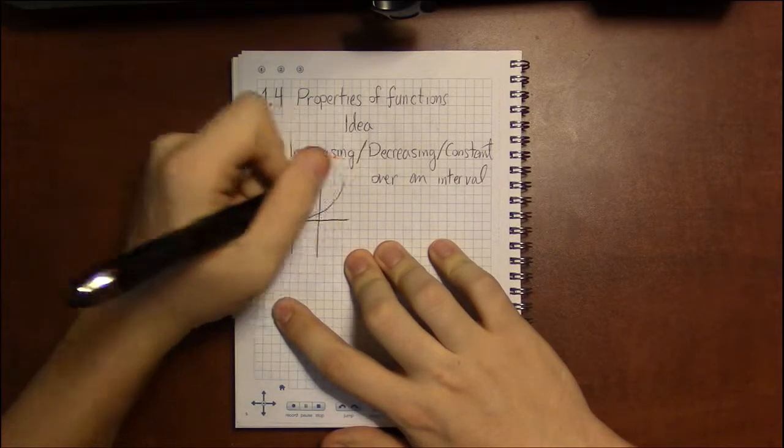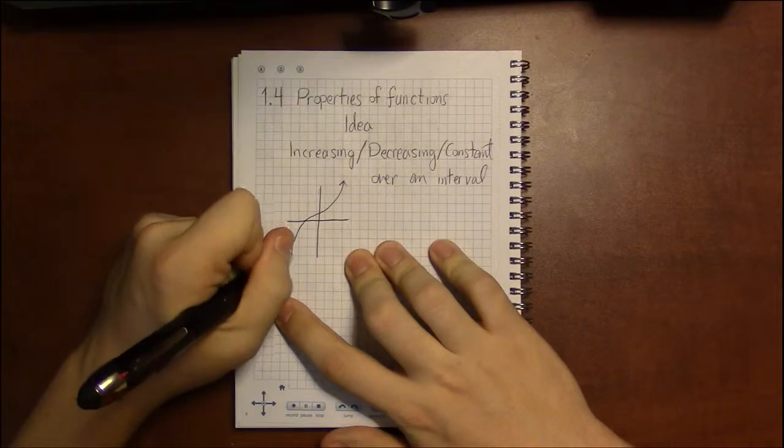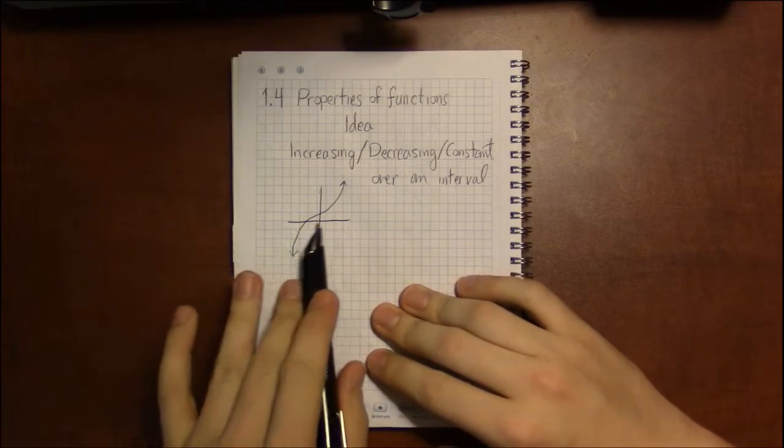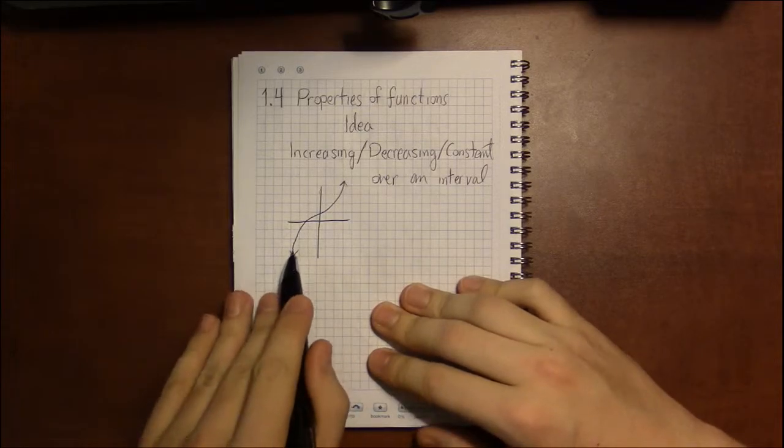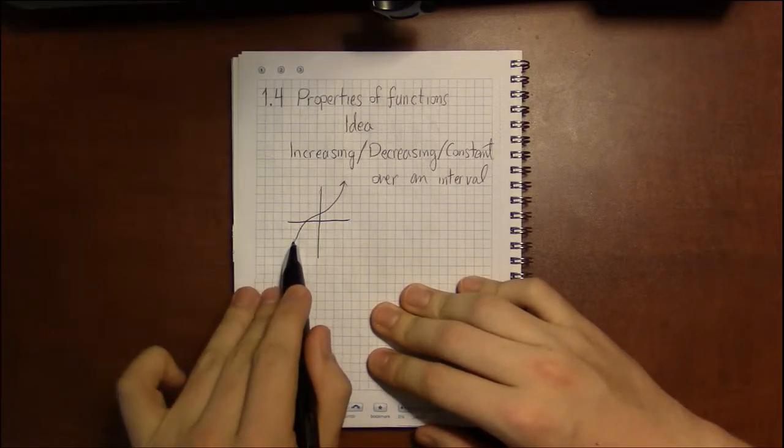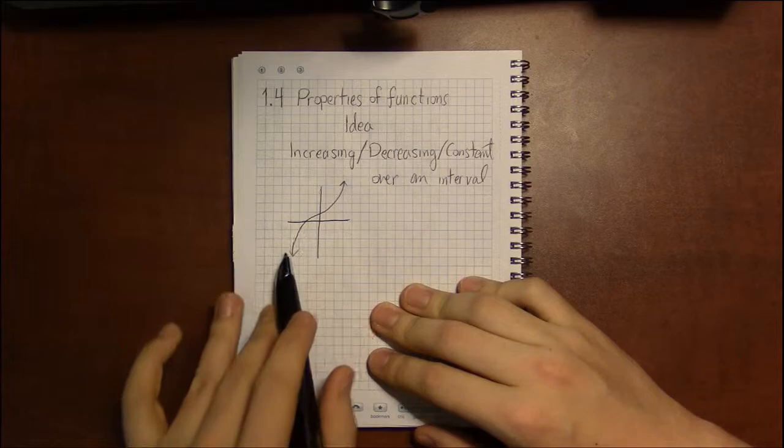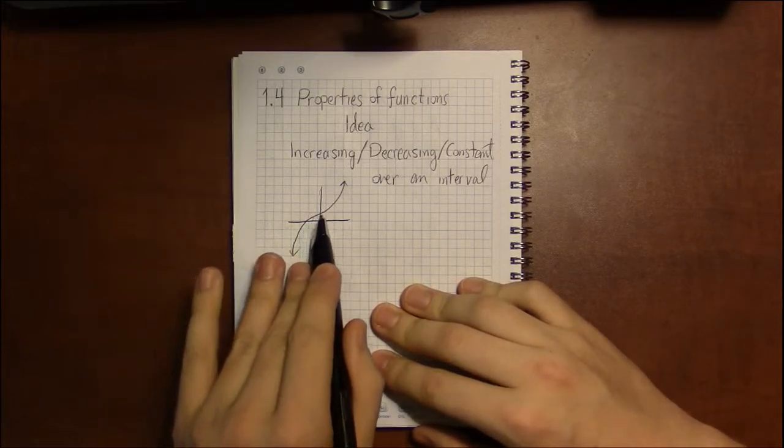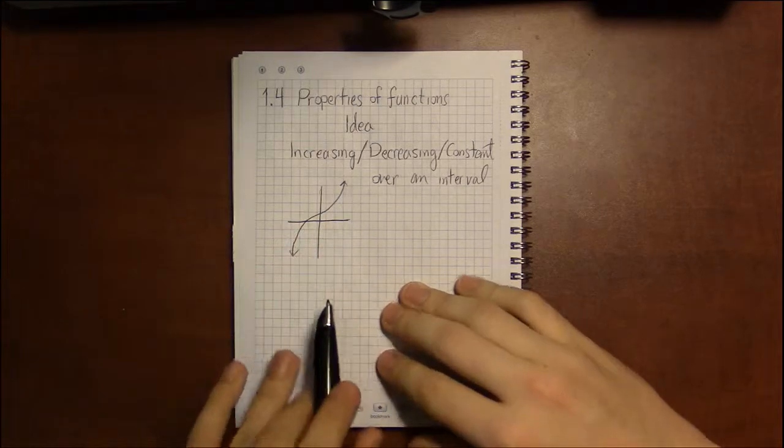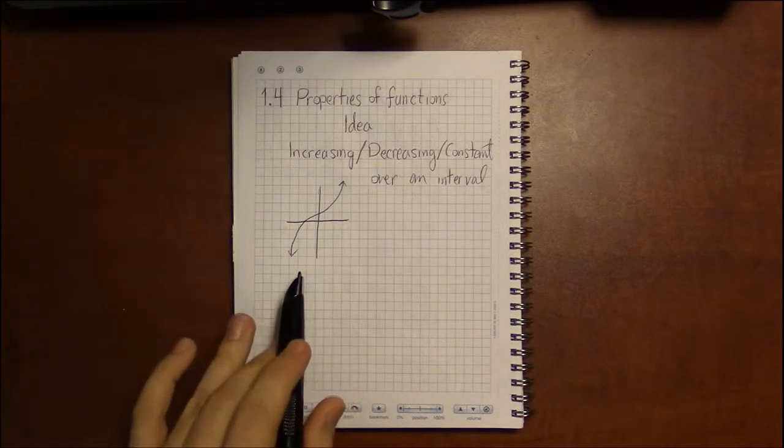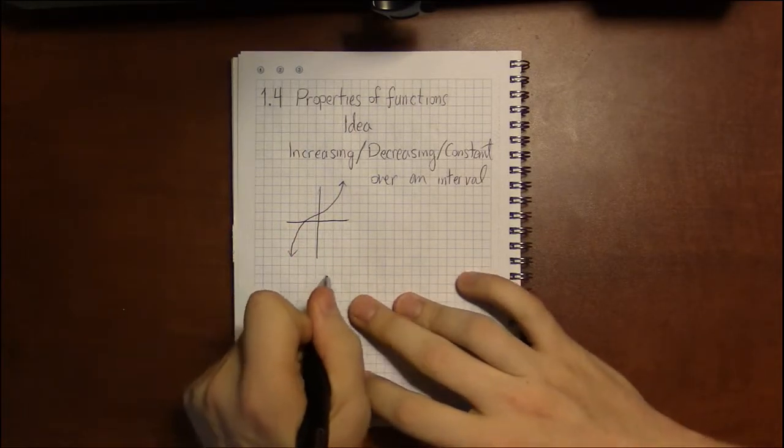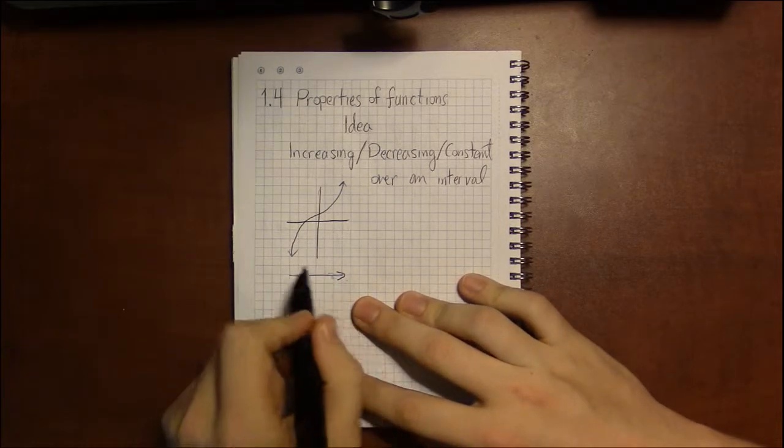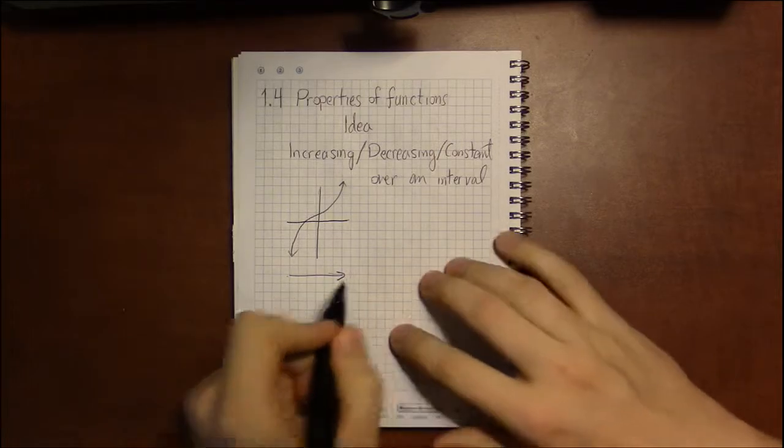So for example, for increasing, here's something that is constantly increasing: as you read the graph left to right, the Y values constantly go up. As you trace the graph, your pen, pencil, finger, whatever, continues to go up. This is the idea of increasing, and remember that we're reading the graph always left to right, from small X values to large X values.